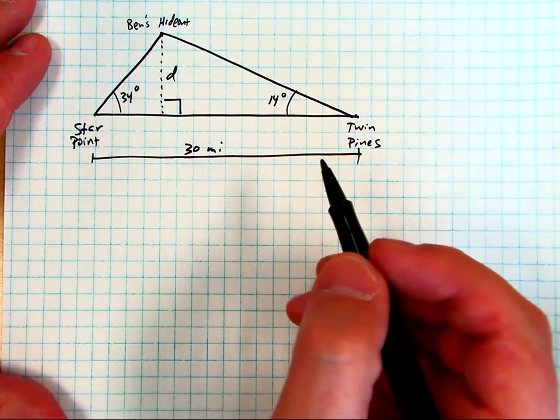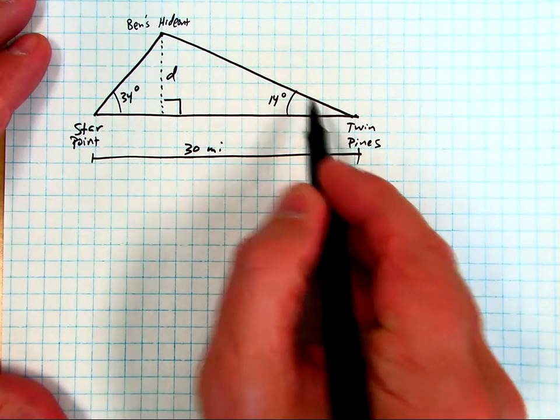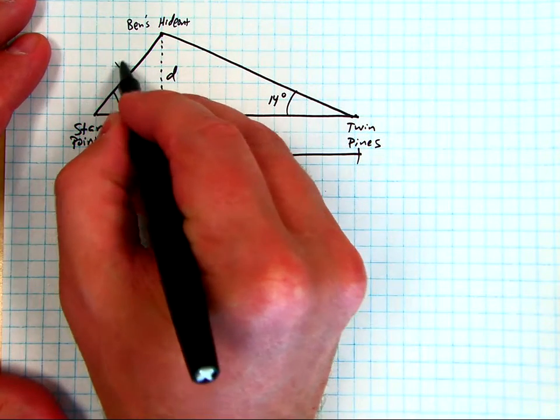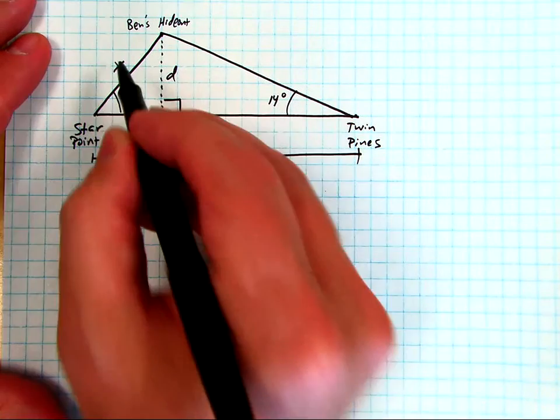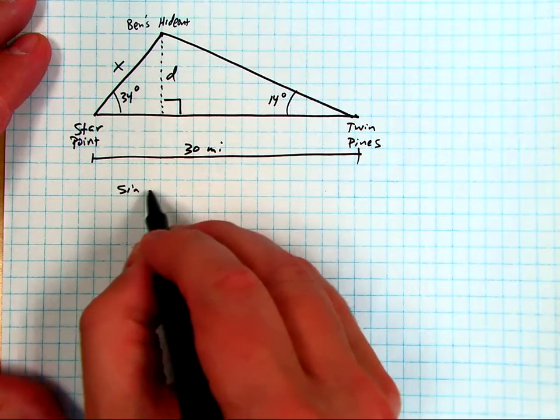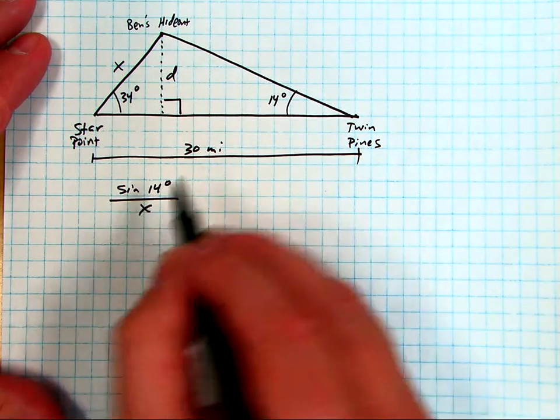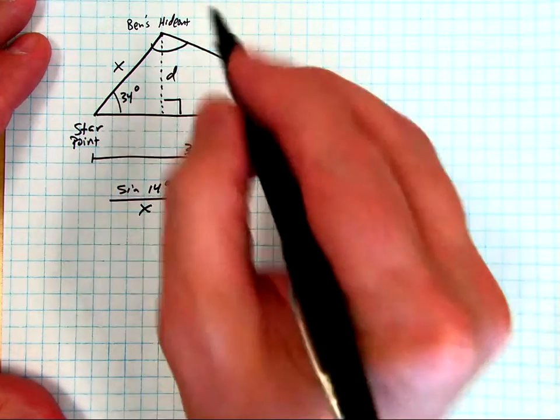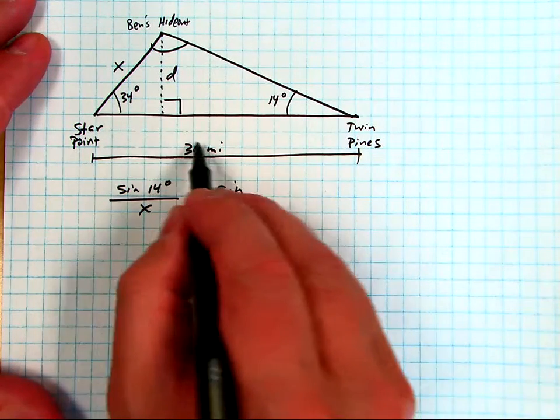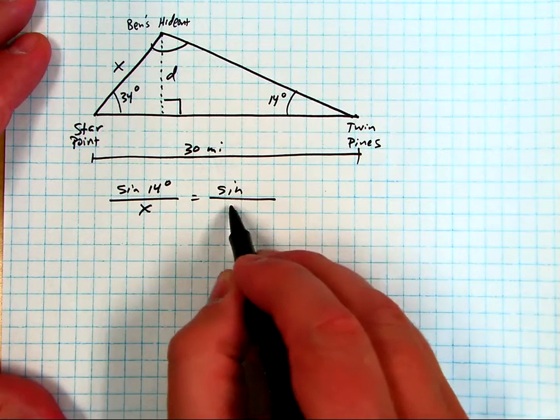Using the law of sines, it says that the sine of this angle over, let's call this side x, so sine of 14 over x is going to be equal to whatever this angle is, sine of that angle over the opposite side which is 30 miles.